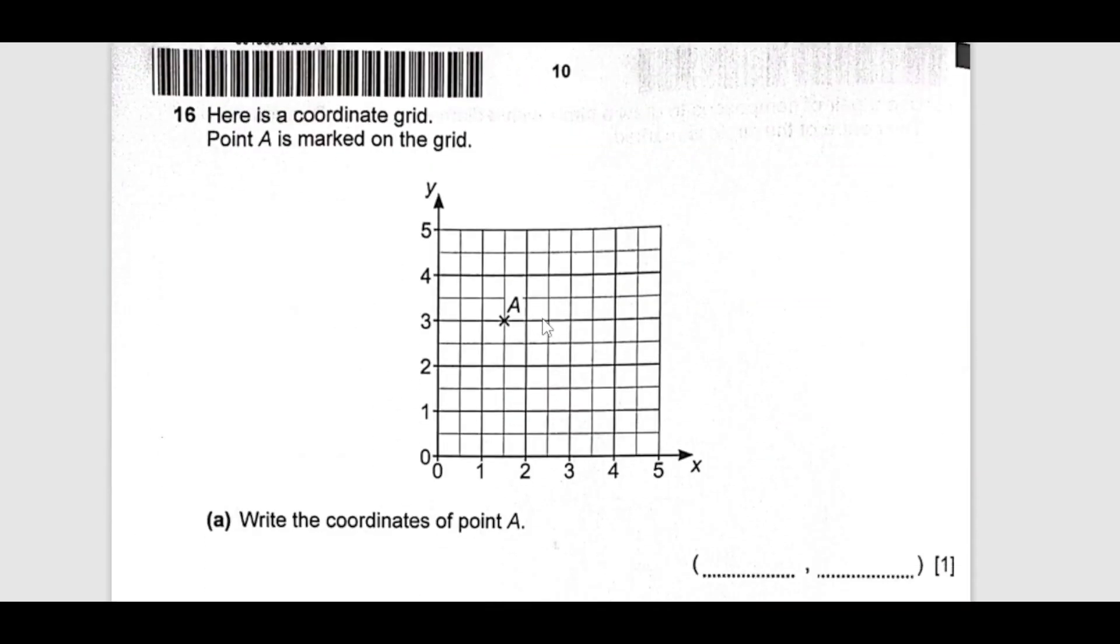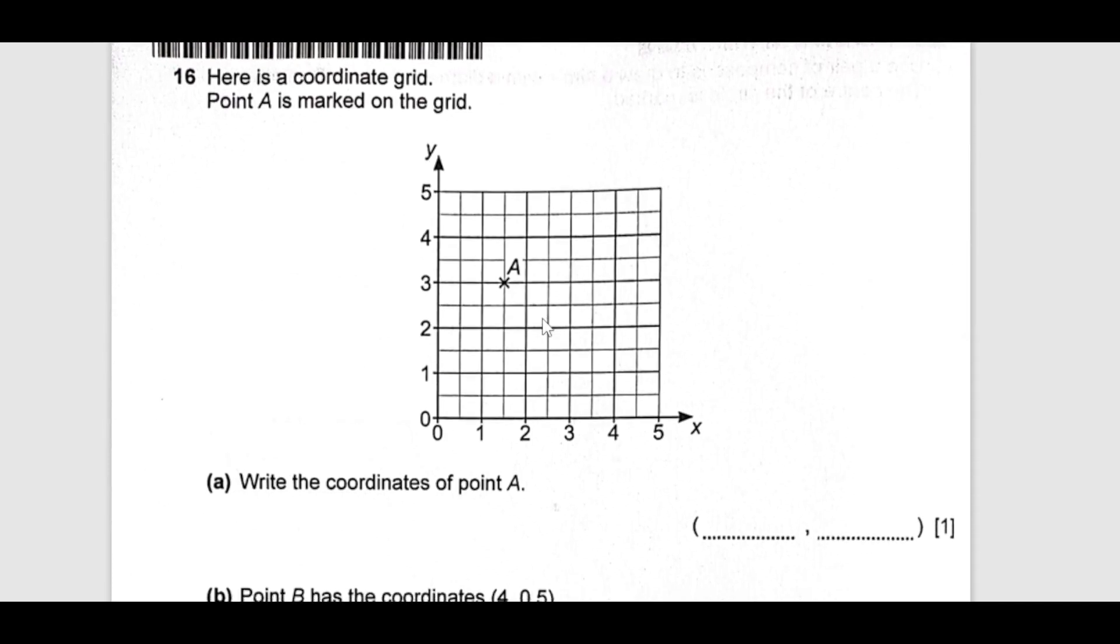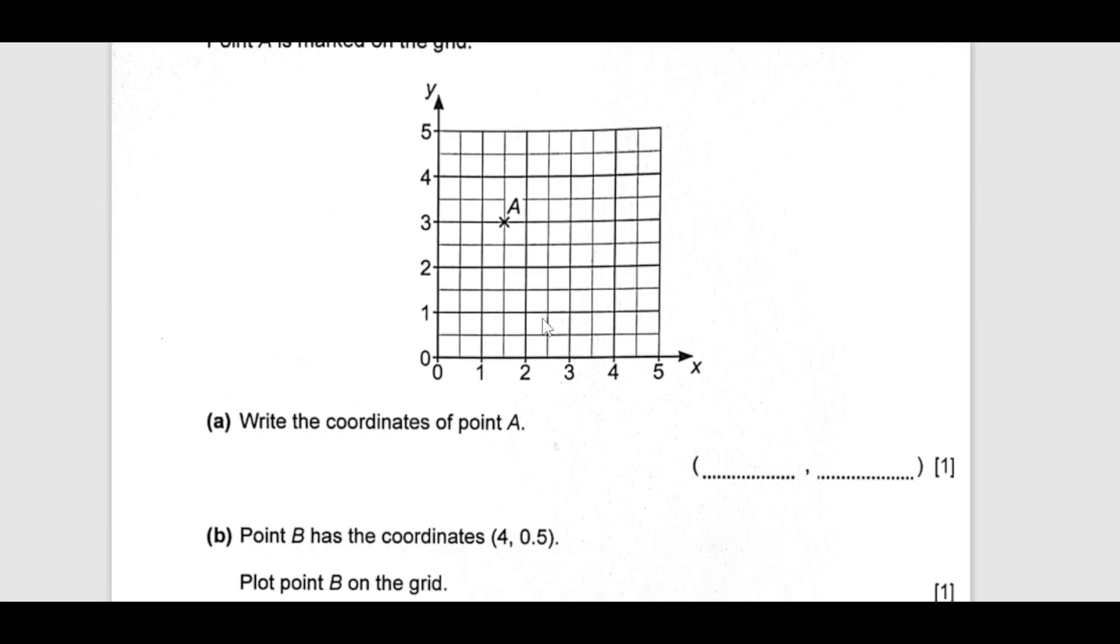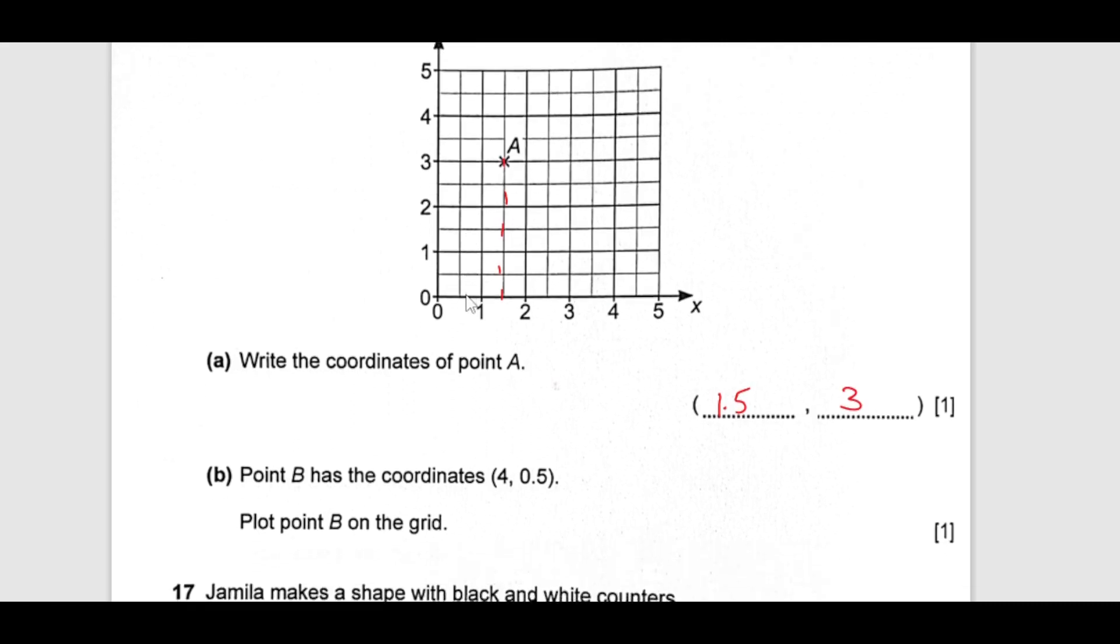Then we have here number 16, here is a coordinate grid. Point A is marked on grid. You can see, write down the coordinates of point A. If you go down here for x values it is 1.5 and y is 3. Now, point B has coordinate 4 and 0.5, plot B on this. X is 4 and y is 0.5. This is here.